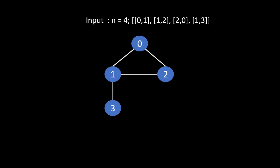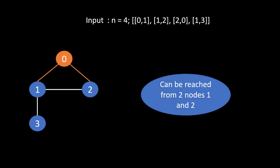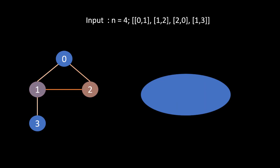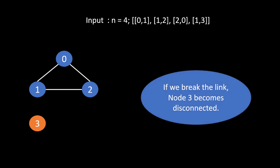Looking at each node's connections: server 0 is connected to nodes 1 and 2; server 1 is connected to 0, 2, and 3; server 2 can be reached by 0 and 1; and server 3 can only be reached by 1. The property of a critical connection is that a node is reachable by only one particular server. If we remove the connection between 3 and 1, node 3 becomes disconnected from the entire network — that's why it is the critical edge.